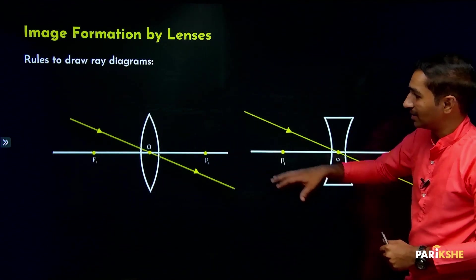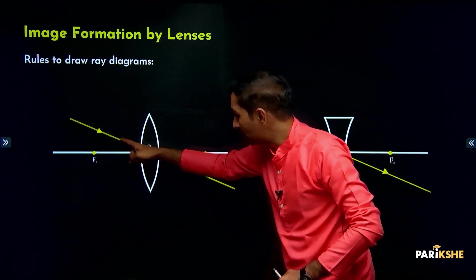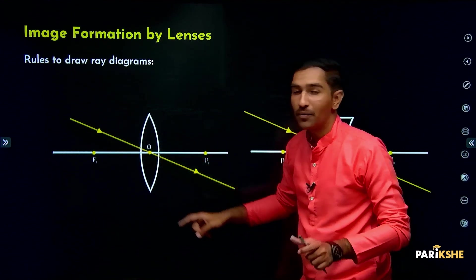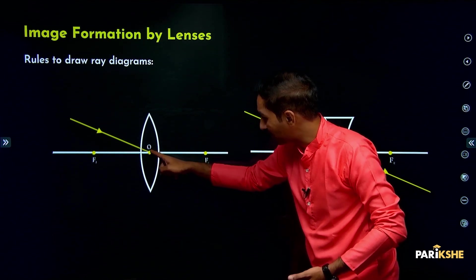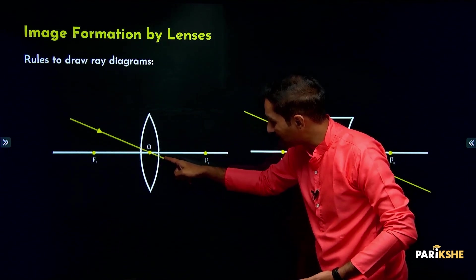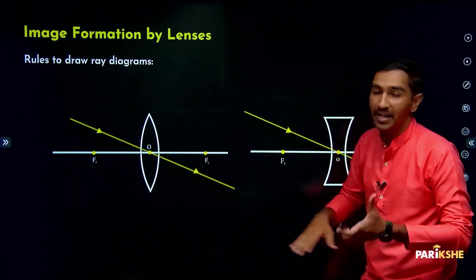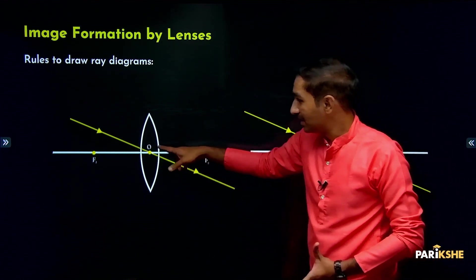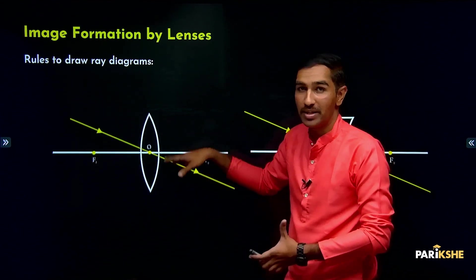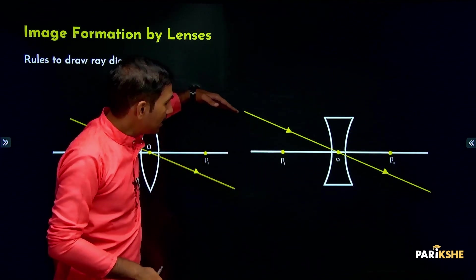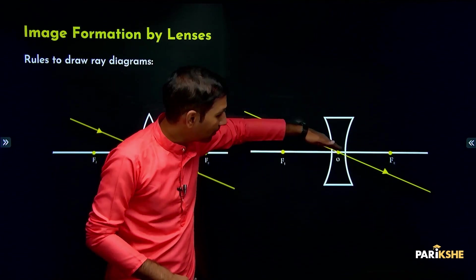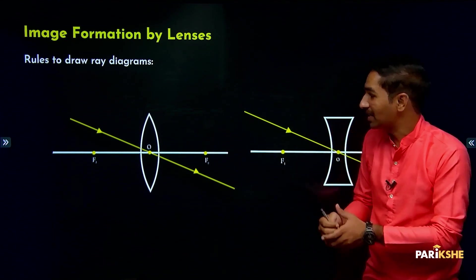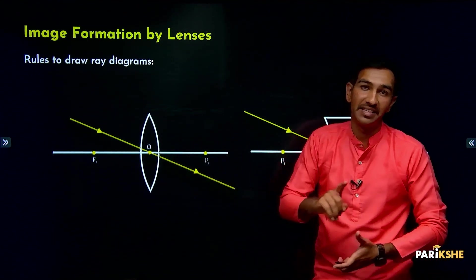Third rule: when the incident ray is directed towards the optic center, it travels straight and enters the lens. When it enters the lens it refracts, but then refracts back — the bending cancels out. So the incident ray and the refracted ray are on one straight line; there is no net bending. This applies in the case where the ray is directed towards the optic center.